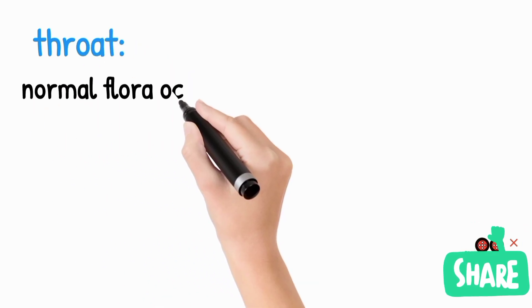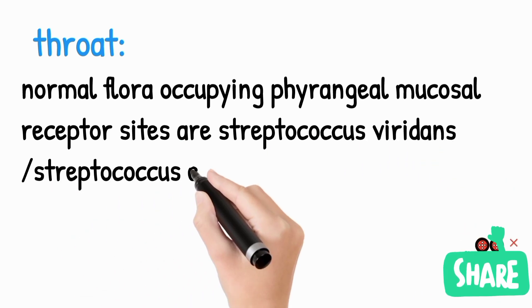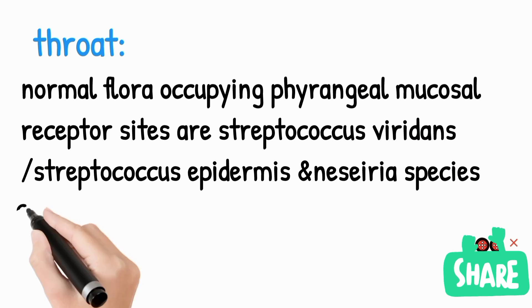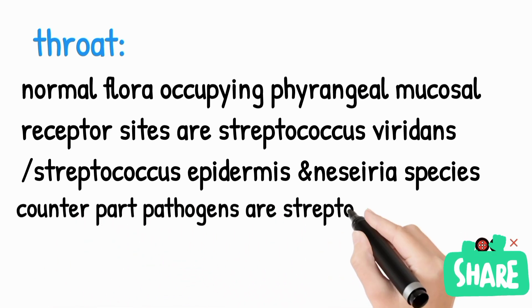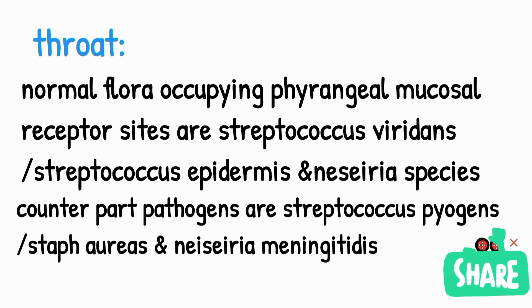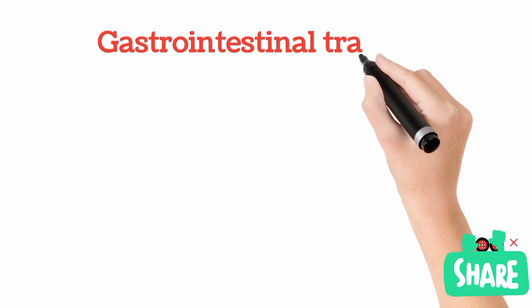In the throat, normal flora occupy the pharyngeal mucosal receptor sites. The important organisms are Streptococcus viridans, Staphylococcus epidermidis, and Neisseria species. These organisms prevent their counterpart pathogens from attaching — for example, Streptococcus viridans prevents attachment of Streptococcus pyogenes, and S. epidermidis prevents attachment of S. aureus to receptor sites on the pharynx.